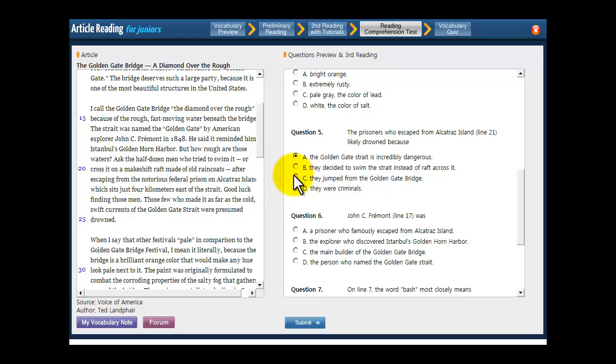It's not B. What about C? They jumped from the Golden Gate Bridge. It doesn't say that. It says they swam or they went in a raft through the straight, which is really rough water. So it's definitely not C. And they were criminals. Now, they were criminals, but is that why they drowned? No, they didn't drown because they were criminals. They drowned because they were criminals who were swimming in really rough water. So D is a silly answer, and get rid of it.